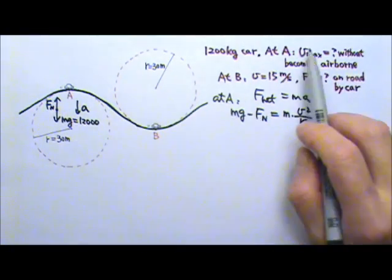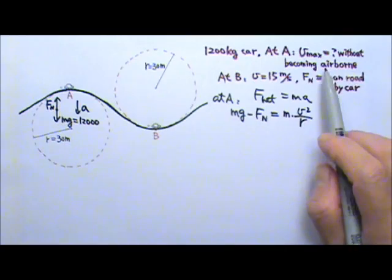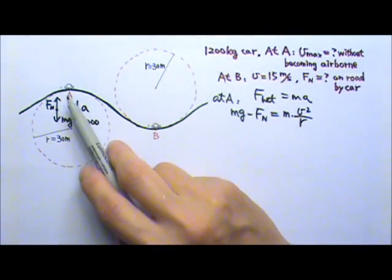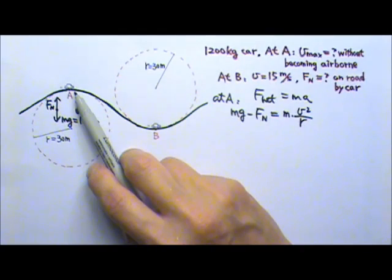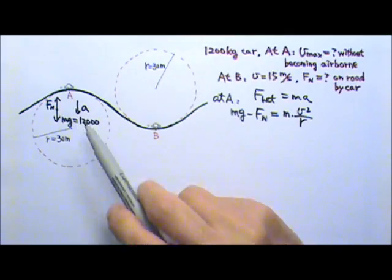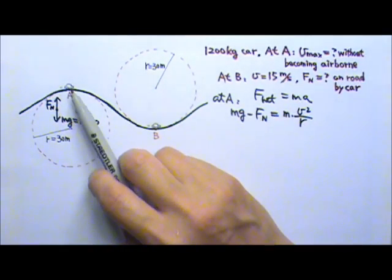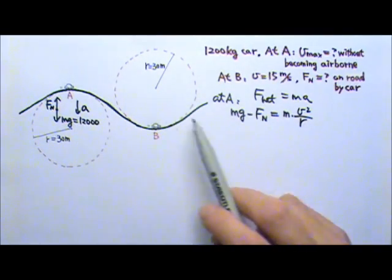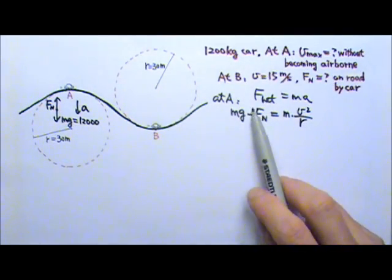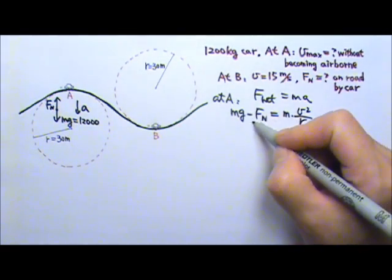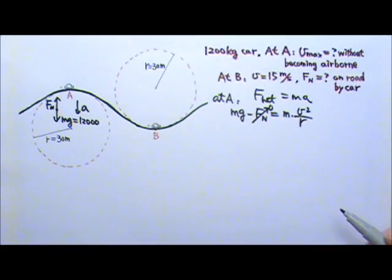Because the car is driving at the maximum speed without becoming airborne, that means the car is almost becoming airborne. That means the car is almost going to lose contact with the road. If the car is almost going to lose contact with the road, it is almost going to lose the contact force, normal force. Which means in this case the normal force is zero.